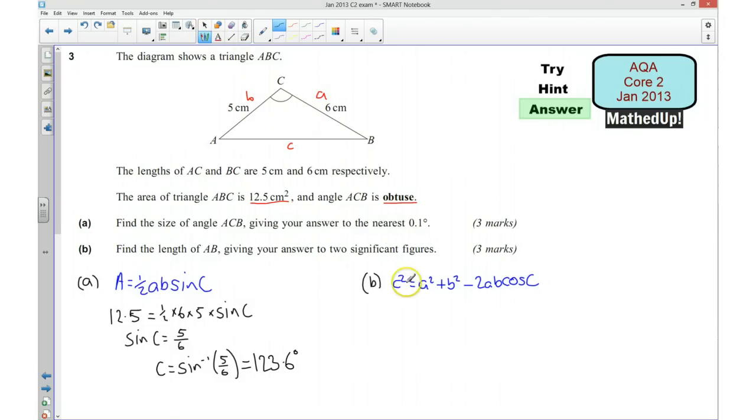So plugging these values into here. C squared, C is what we're trying to find, is equal to A squared which is 36 plus B squared which is 25. Take away 2 times 6 times 5 which is 60 times the cosine of the angle C which is 123.6 degrees.